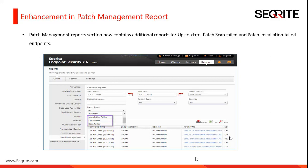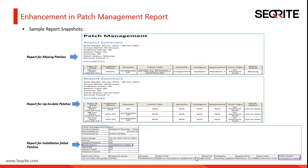Let me show you some sample report snapshots. You can see the report for missing patches in the first snapshot. The second one is for the up-to-date patches and the third one is for the installation failed patches. Securite provides the option to generate reports in either PDF or CSV formats. The first and second snapshots are from PDF reports and the third one is from CSV.